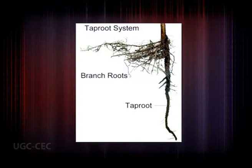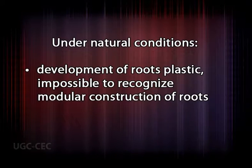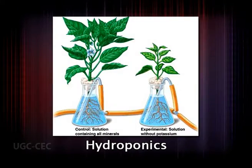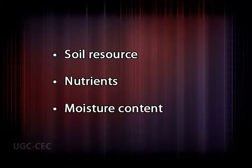The root systems of a plant are also modular — made from repeating modules fitted together, although the modules are quite different from shoot modules. Under natural conditions, the development of roots is so plastic because of the extreme physical heterogeneity of soil that it is practically impossible to recognize the modular construction of roots. It is recognized only if plants are grown in a homogeneous soil mixture or in hydroponic culture. Nodes and internodes are not identified in the modular construction of roots.